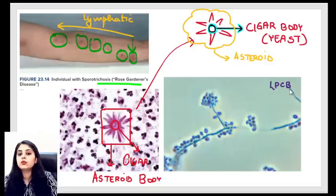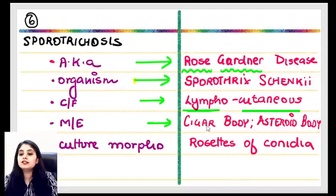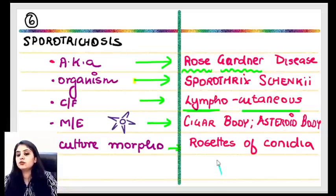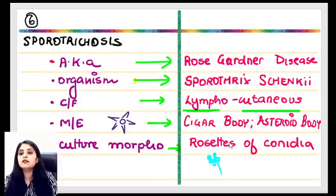The brown structures in Chromoblastomycosis are called copper penny bodies (they look like copper coins). They are also known as muriform bodies, Medlar bodies, and sclerotic bodies — all names appear in exam papers. The organism and disease: Chromoblastomycosis = verrucous dermatitis, copper penny / muriform / Medlar / sclerotic bodies.